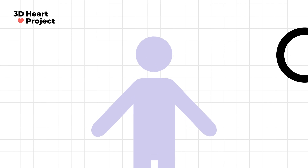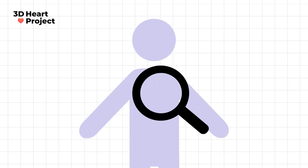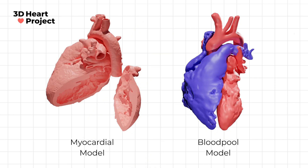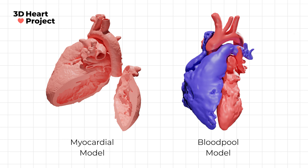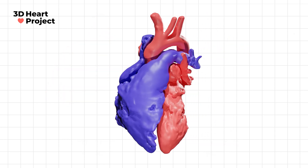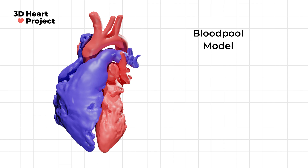The models will be shown to you as if you are looking at the heart inside the body of someone in front of you. Each 3D model of the heart can be made to show either the muscle of the heart or the blood contained within the chambers. Today we are going to be using a model that shows the blood inside the chambers, which is called a blood pool model.